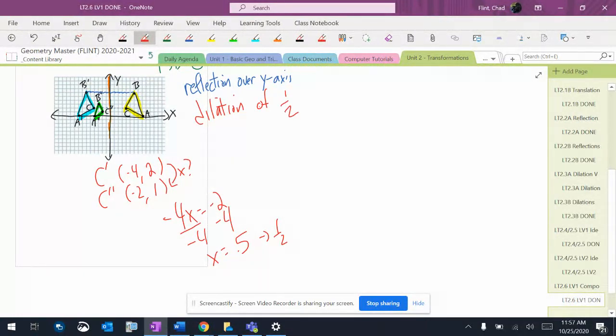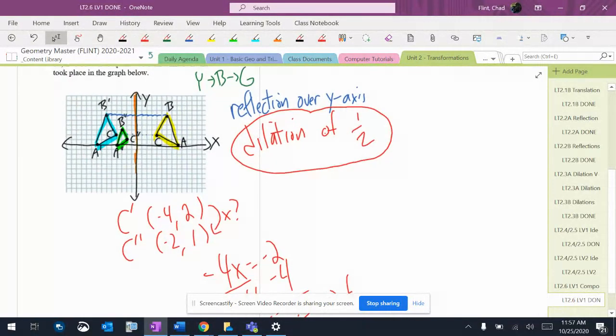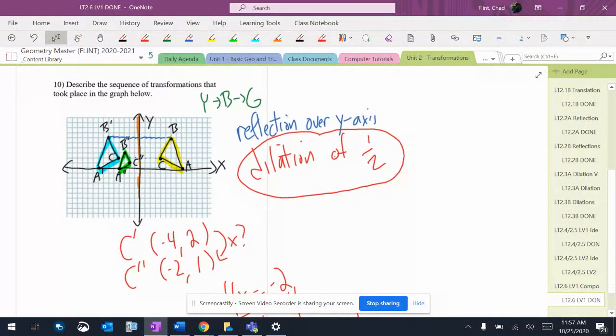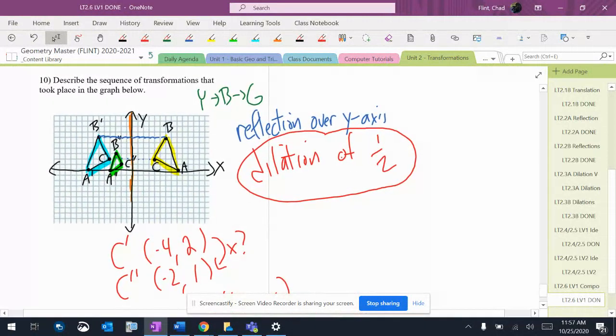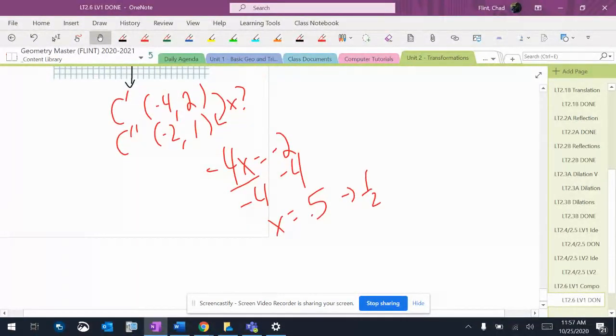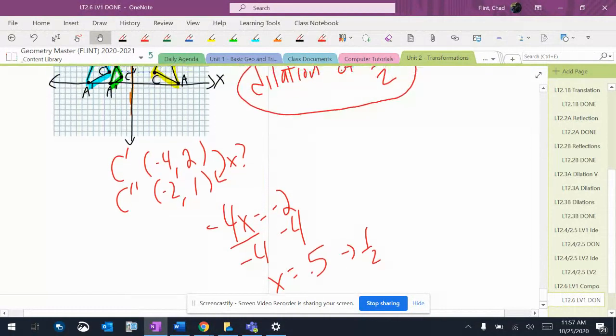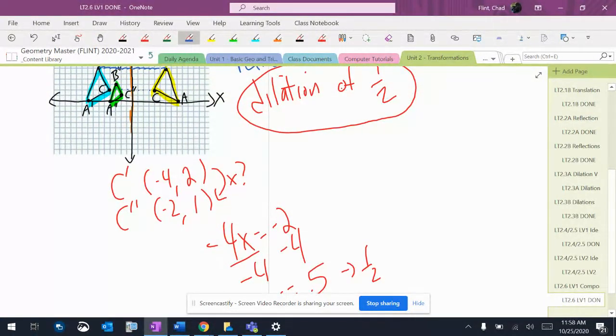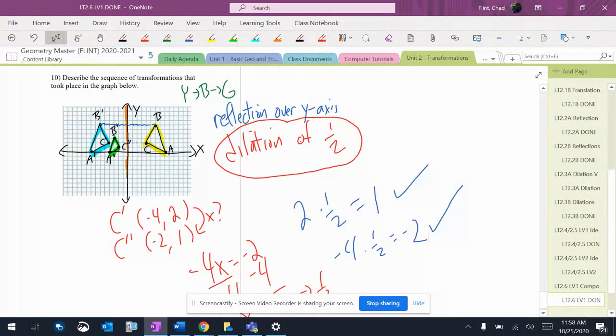So a dilation of one-half. Be careful, because I think sometimes we can get confused and think that it's negative one-half because of negative numbers, or negative 2 might make it smaller. But you've got to make sure that you look at this and make sure that they're actually multiplied. Let's try it out. 2 times one-half equals 1. That's good. And negative 4 times one-half equals negative 2. Also good. We can check those things out to make sure that we have the dilation set up correctly.